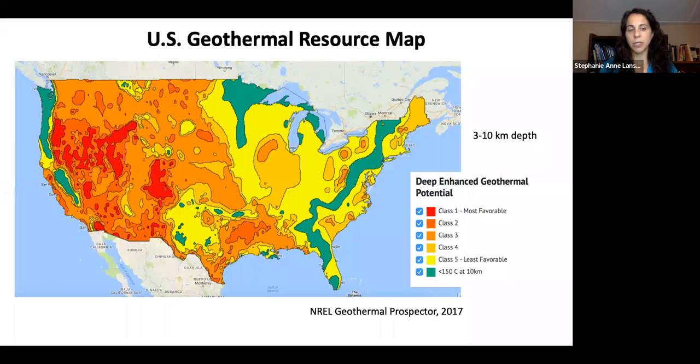Looking specifically at the U.S., here are our class one resources for deep enhanced geothermal, which we use more for electricity versus shallow resources for heat pumps. It's concentrated in the western part of the United States, where we have class one, the most favorable, compared to class five, which is least favorable.